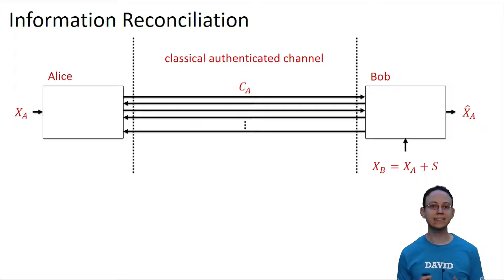First of all, let's describe the communication scenario. Alice and Bob hold two strings that we denote xa and xb. xb, the string of Bob, equals xa plus a string of errors that we denote by s. Alice and Bob are connected by a classical authenticated channel.